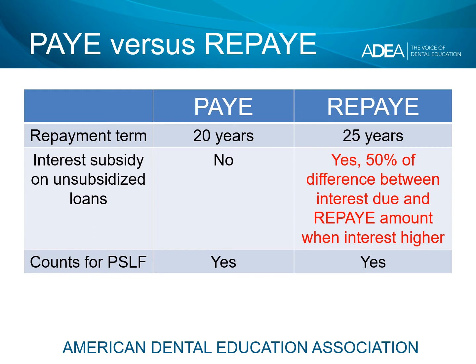The way to think about this is that if you have a big gap between the amount you borrowed and your income, you're likely going to have a big gap between how much interest you owe and what your REPAY calculated amount is each month. If that's the case, you're likely going to benefit from REPAY because the government will slow down how fast your debt grows.